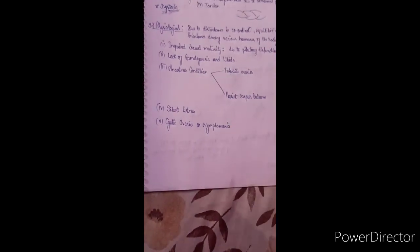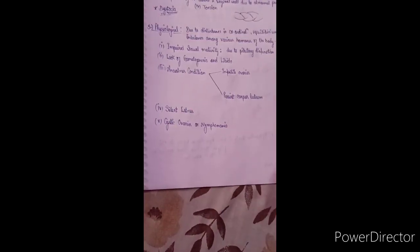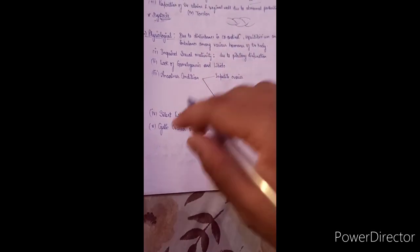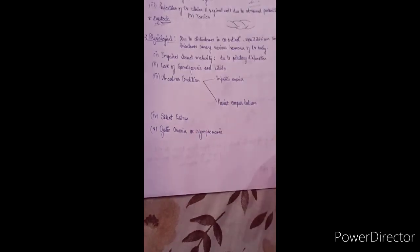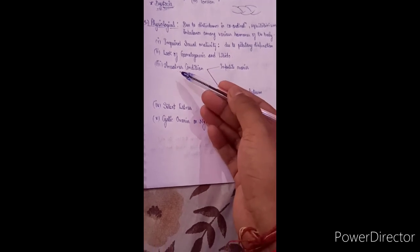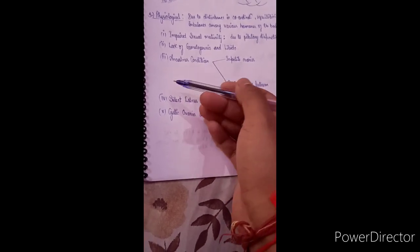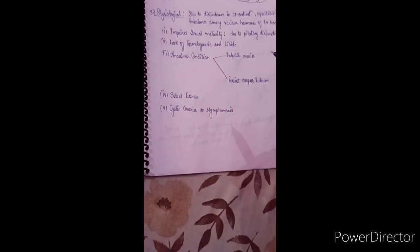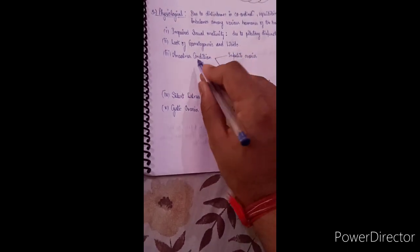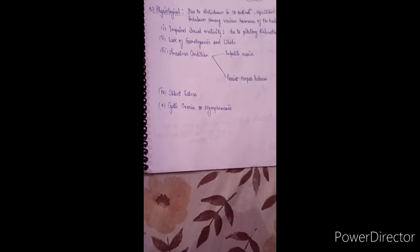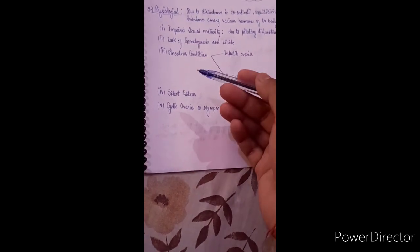Next is the anestrus condition. The estrus cycle — onset of the reproductive life of the animal — can be disrupted in various ways. Two important conditions causing anestrus are: first, infantile ovary, meaning the ovary is immature; and second, persistent corpus luteum.